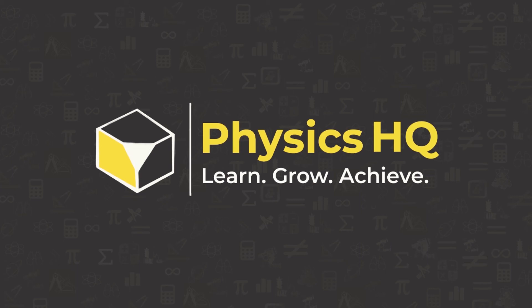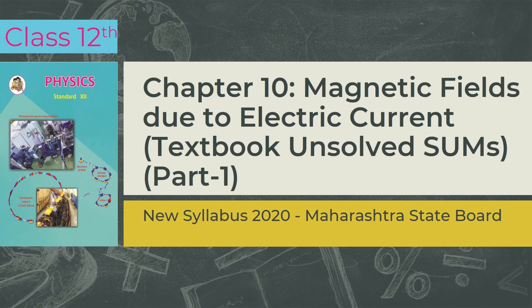Hello everyone, welcome back to Physics HQ. This is Professor Sandeep, your tutor for the class 12th lecture series. Continuing with the lecture series of solving MCQs and sums of class 12th physics, today we will be covering the textbook unsolved sums of chapter 10: magnetic fields due to electric current. We have already solved MCQs in the previous video. Please check it out by clicking on the top right eye icon. Let us start with the first sum.